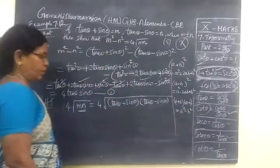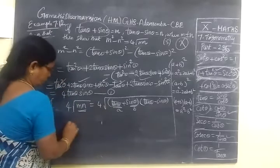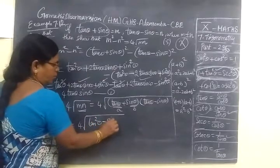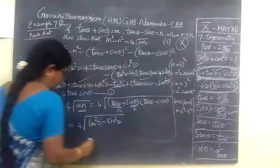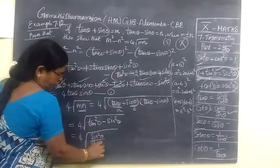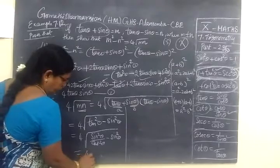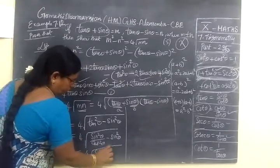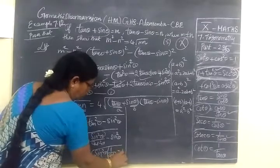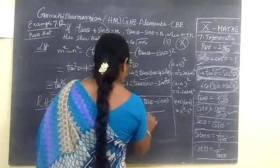This has to prove in the identities, using fundamental formula A square minus B square. So this is a, this is b. So equal to 4 into root of tan square theta. So tan square theta minus sin square theta. Tan square theta is sin square theta by cos square theta.